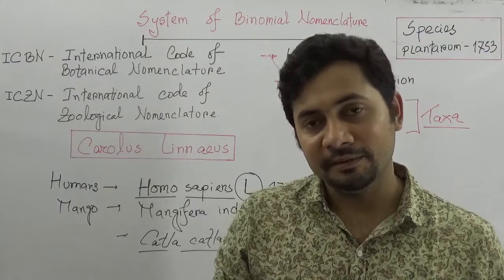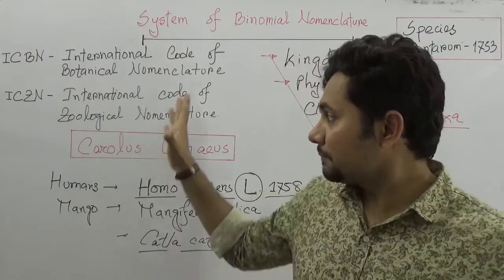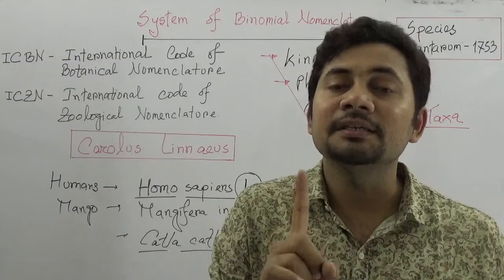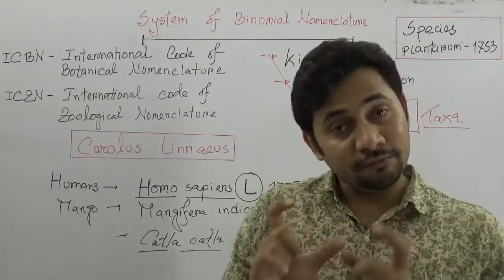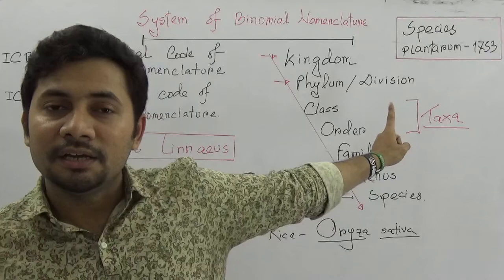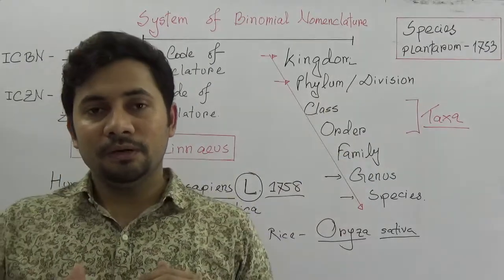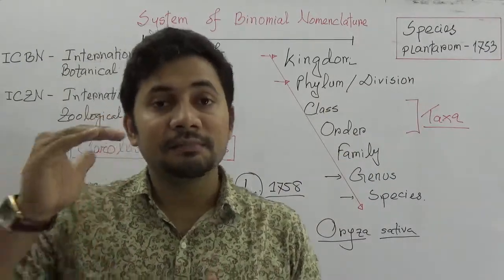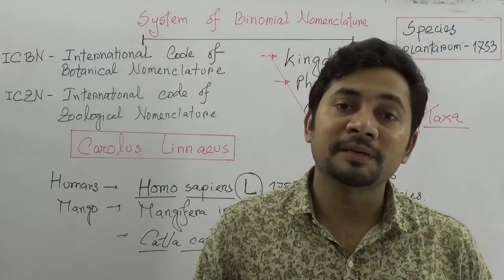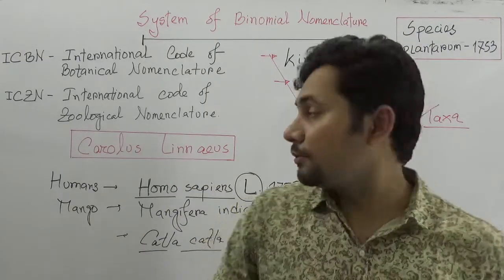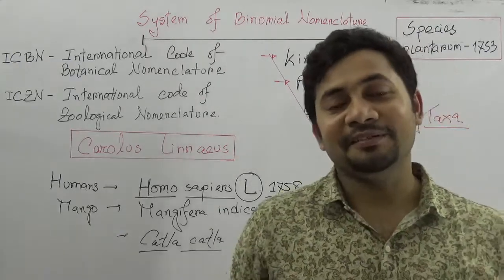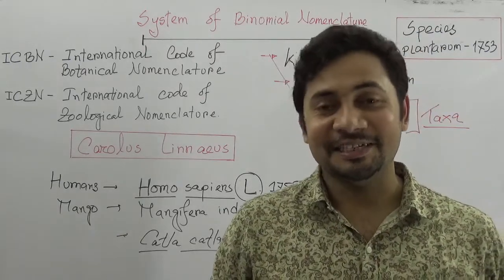Remember: ICBN for plants, ICZN for animals, the name of Carolus Linnaeus, and his book with the year 1753. The principles of binomial nomenclature are very commonly asked. Practice makes everybody perfect, so I hope you will learn well. Do let me know what you need — see you in the next class, stay well!